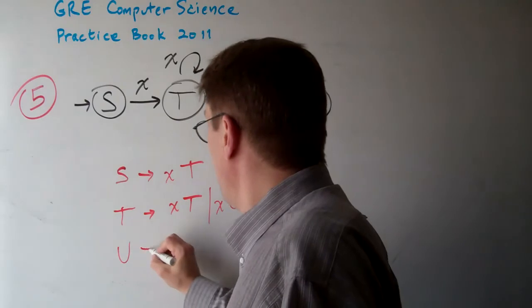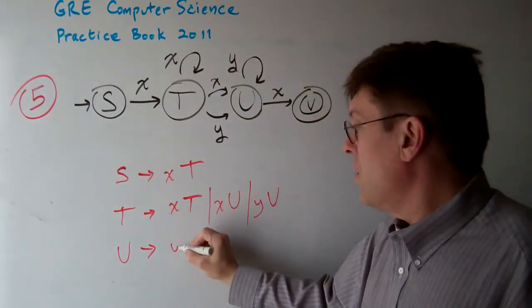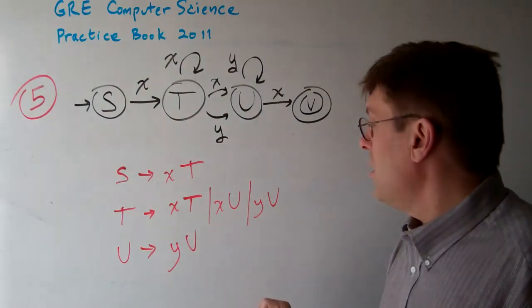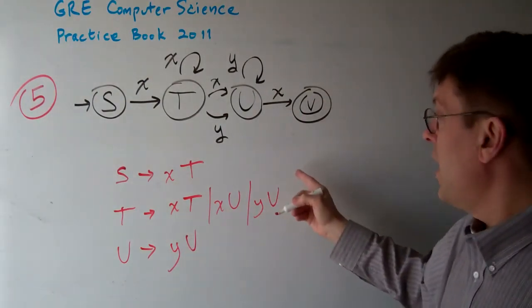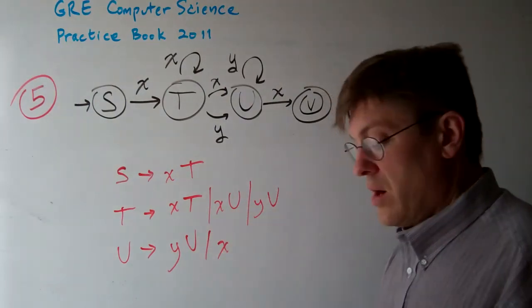Now from U, we can process a Y and then go back to U again. Or we can just add an X terminal and we are done.